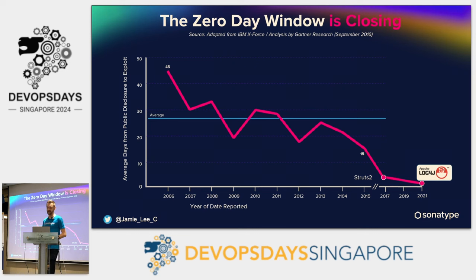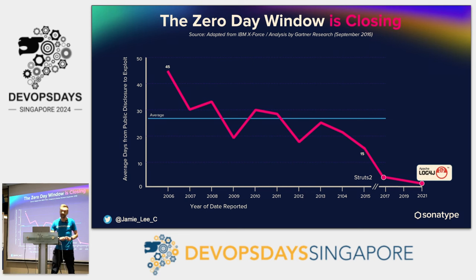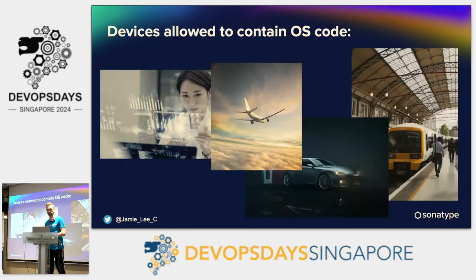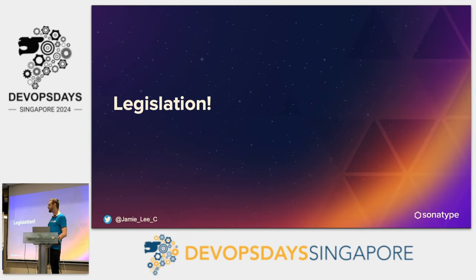Things have changed quite a lot. Back in 2006, when a vulnerability was announced, you had about 45 days to fix it. Fast forward to 2021 with Log4j — that was down to about a day, if less. We have to be on our toes to fix vulnerabilities as quickly as possible. And open source code is in everything: insulin pumps, aircraft, self-driving cars, trains. And it's getting worse — people are finding new ways to attack us.